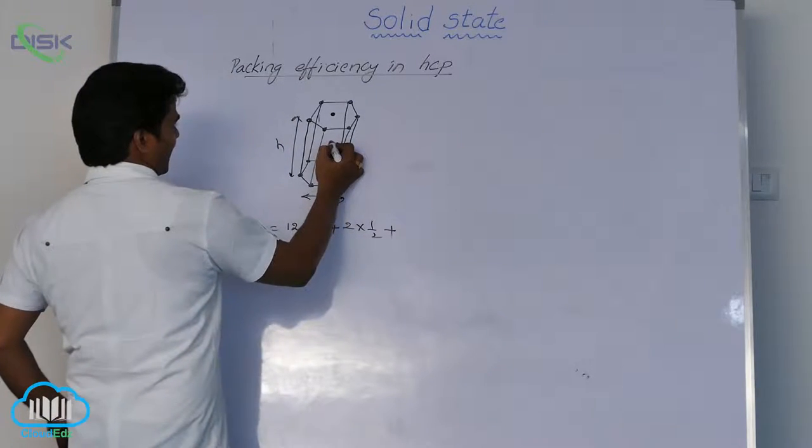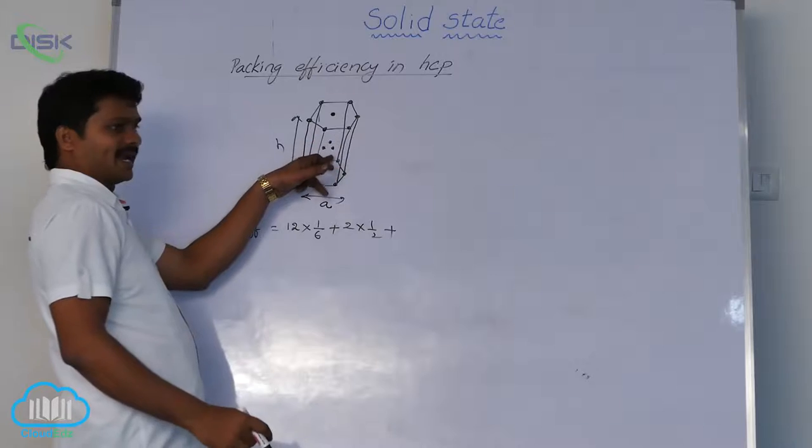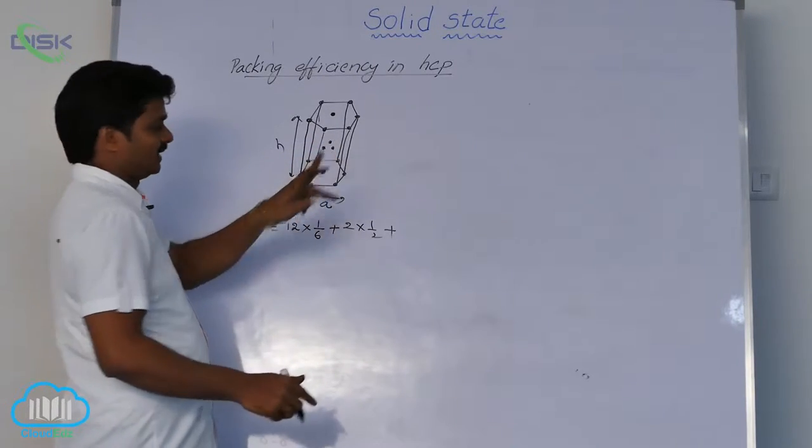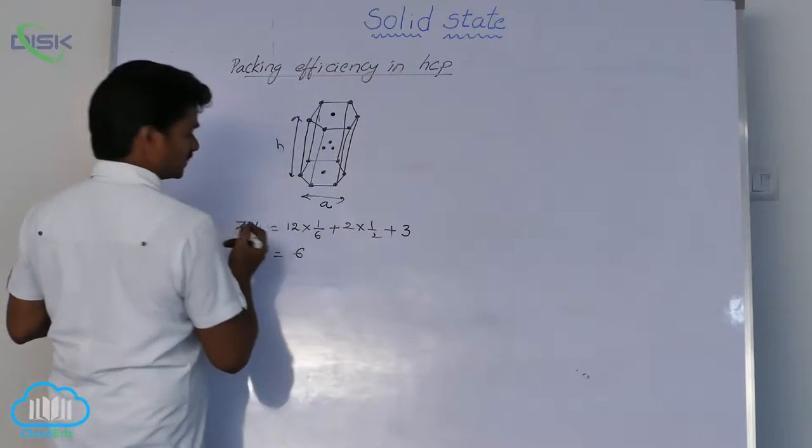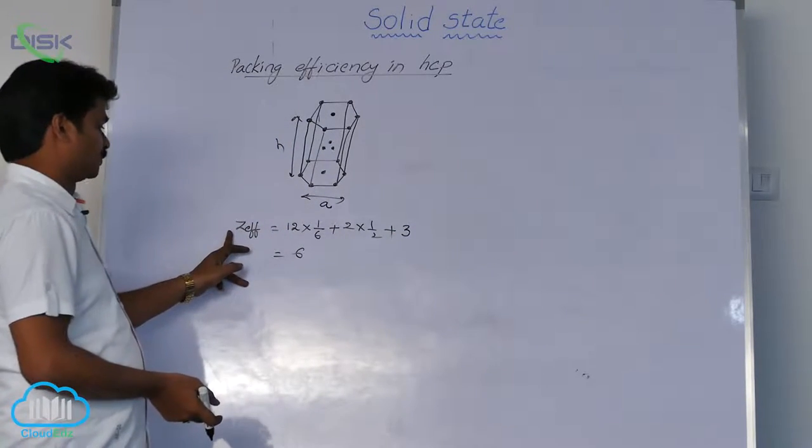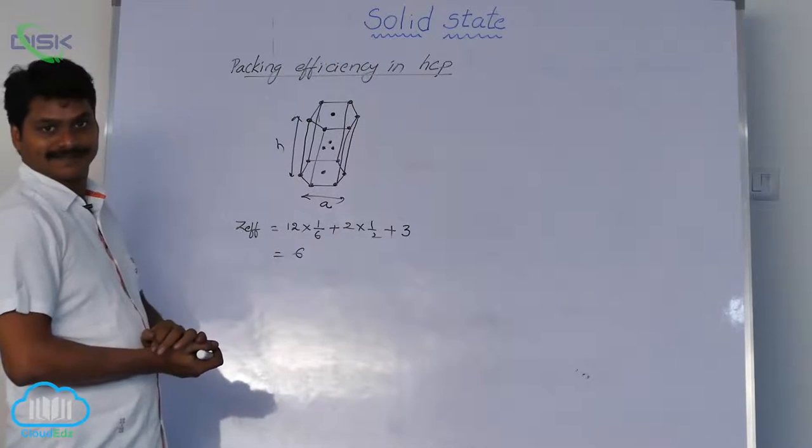Plus these are atoms inside, that means these are atoms present in the unit cell. That is my complete atom, 3. So here 6, total effective number of atoms in hexagonal system, 6.